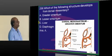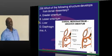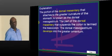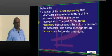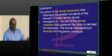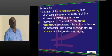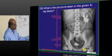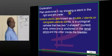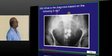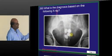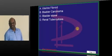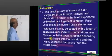The dorsal mesentery typically gives rise to the greater omentum — you must know how the mesentery is divided and its role as supporting tissue around the small intestine. On the X-ray, the structure shown is a stent in the ureter. The stone shown is in the bladder — if you answer that correctly, you get NEET PG.